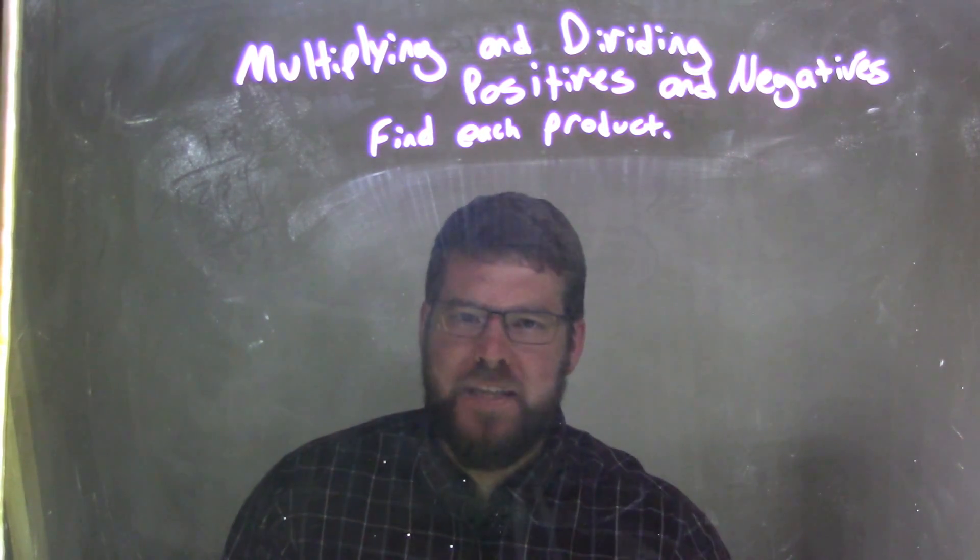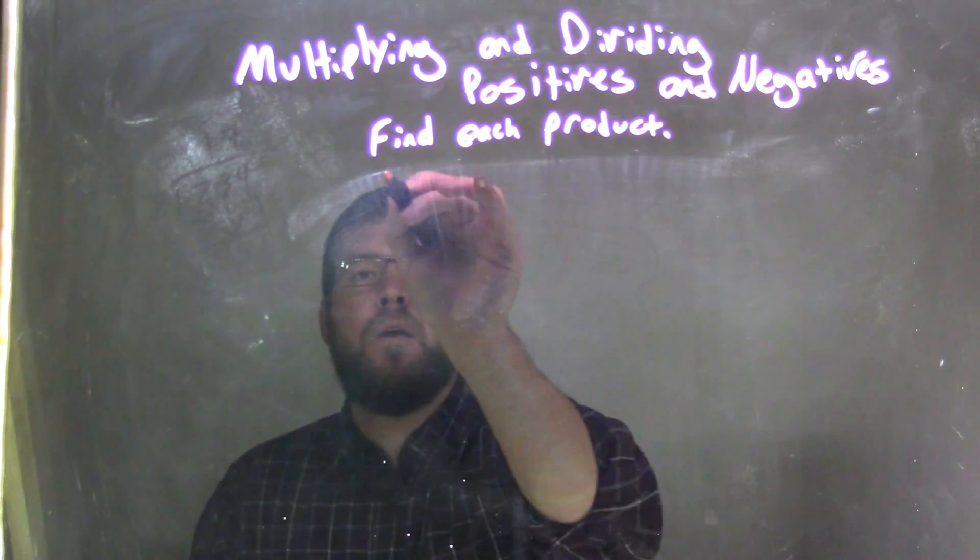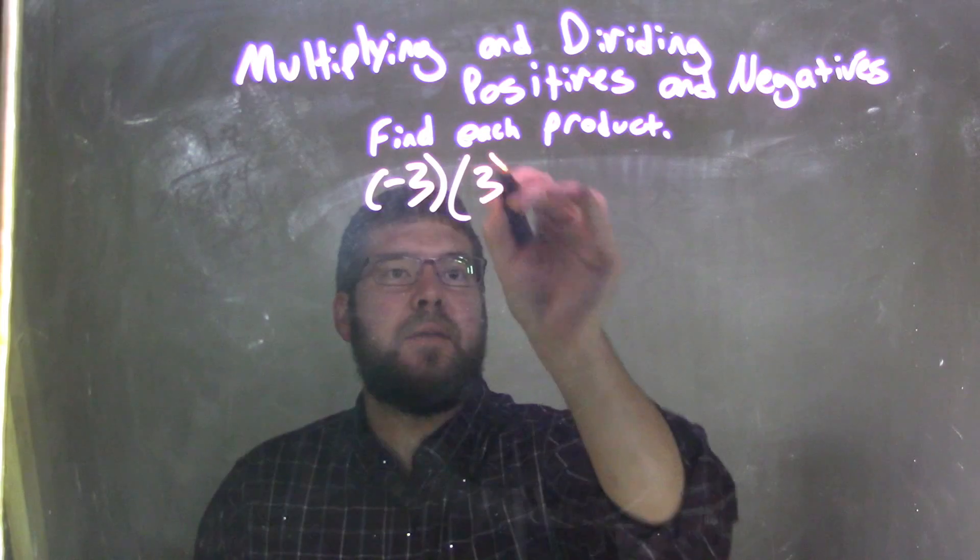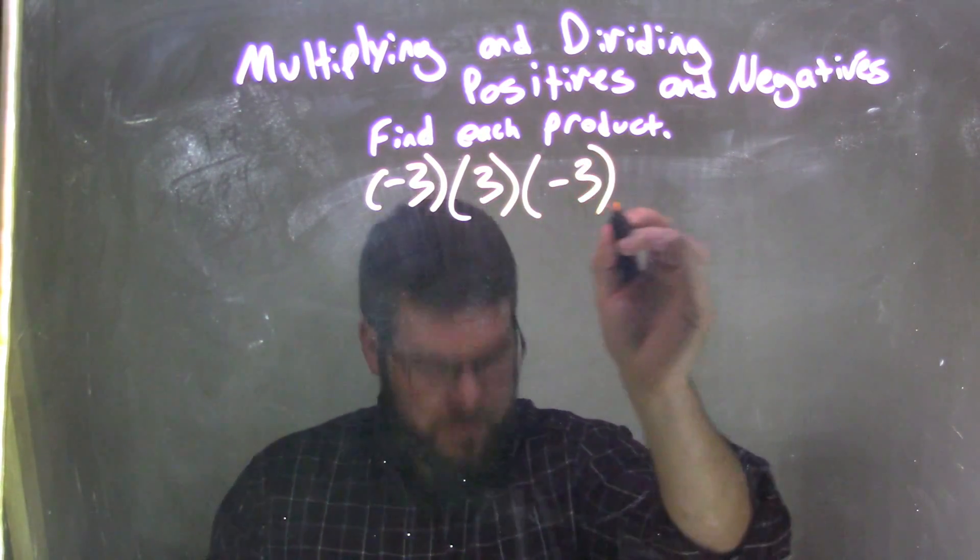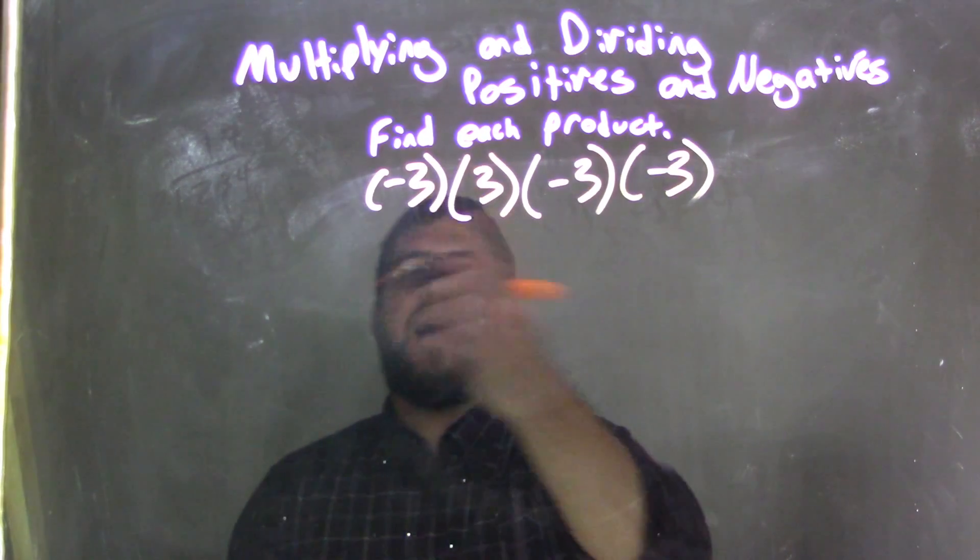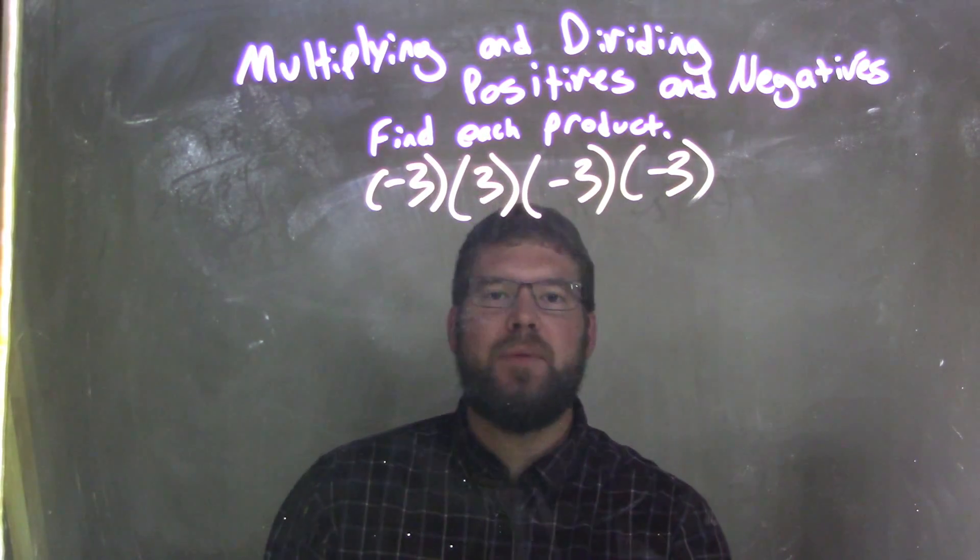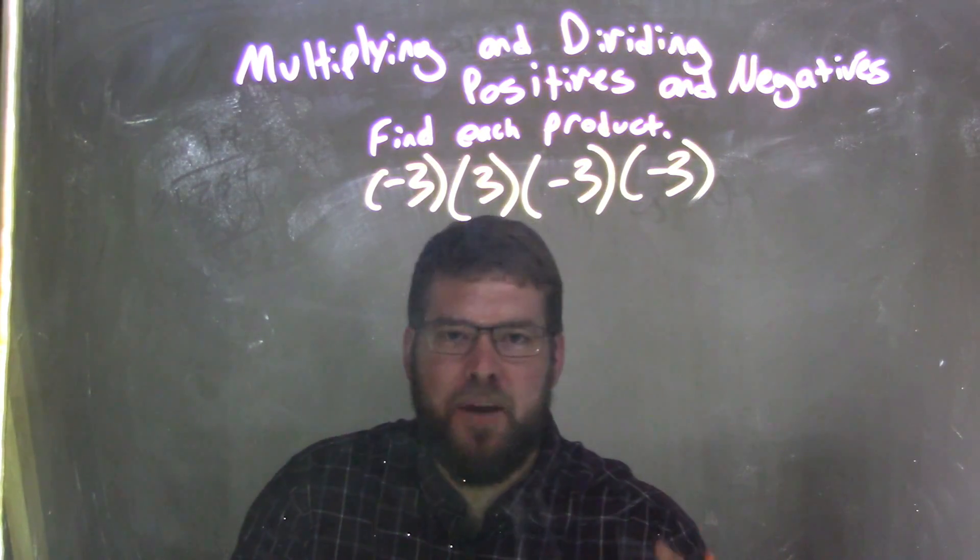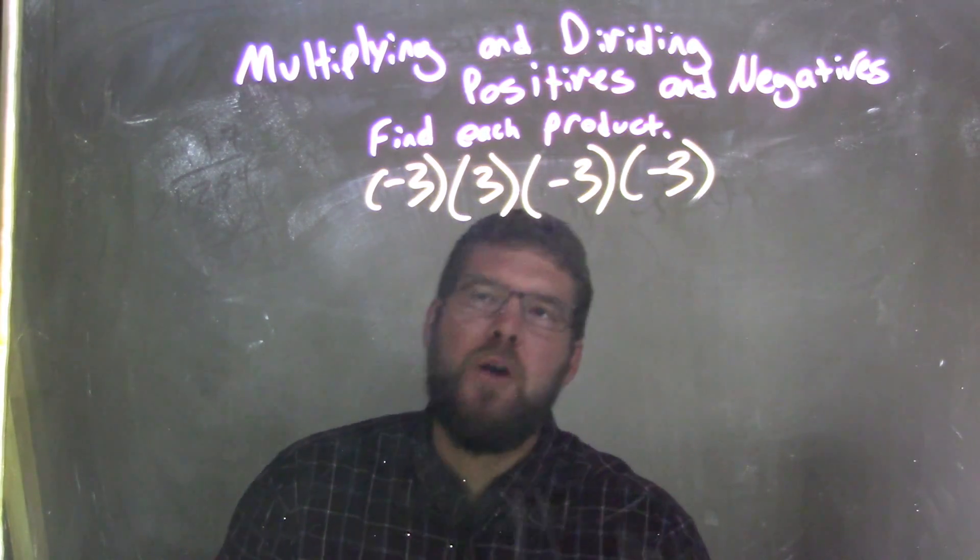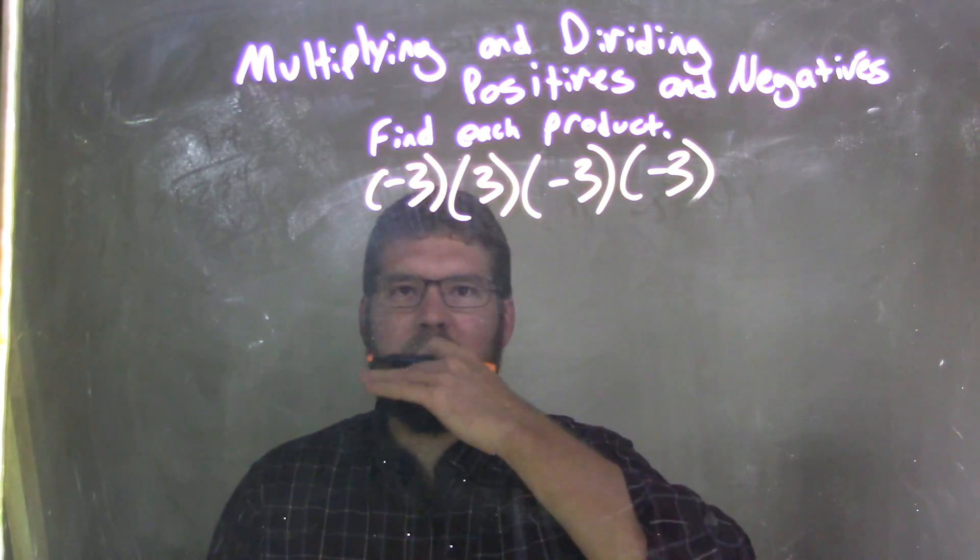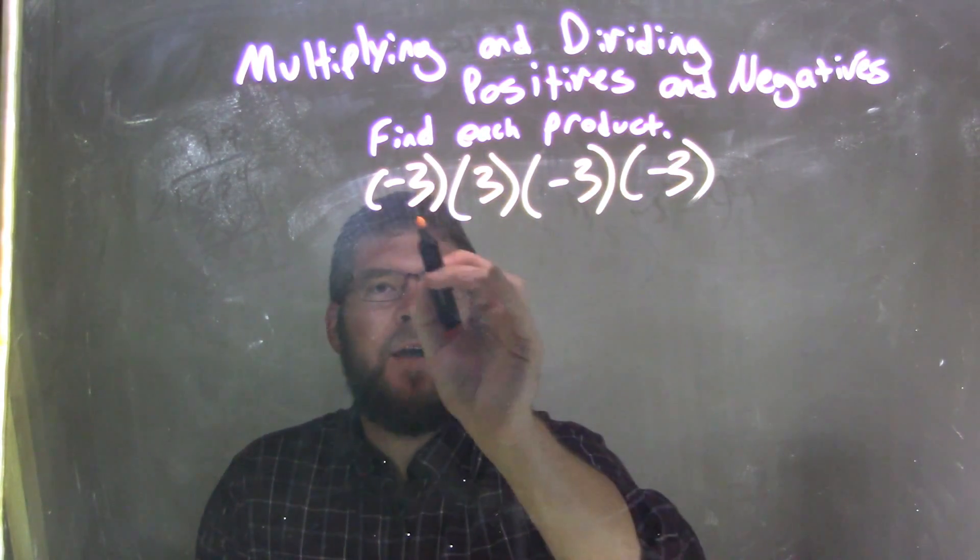So if I was given this product: negative 3 times 3 times negative 3 times negative 3, we have a lot of 3's multiplied here. We have 3 of them that are negative, so knowing that's odd, our final answer is going to be negative. It's all multiplication, but we'll get there. Let's go read left to right. There's multiplication between each set of parentheses, so keep our 3's in line.